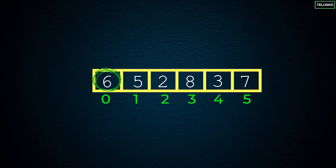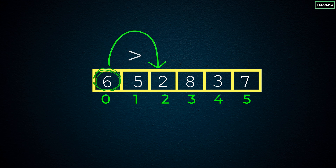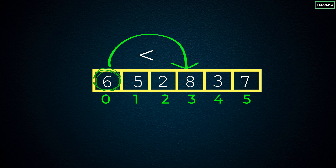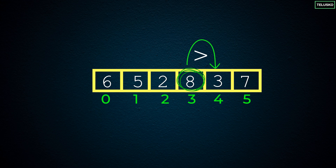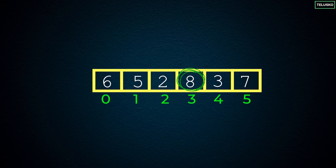We start comparing six with all other values. We compare six with five — six is still bigger, move on. Compare six with two — still bigger, move on. Now we compare six with eight, and we know eight is the biggest value. So we update our biggest variable from six to eight. Then we compare eight with three — eight is still biggest. Compare eight with seven — eight is still biggest. After going through all values, we know eight is the biggest.